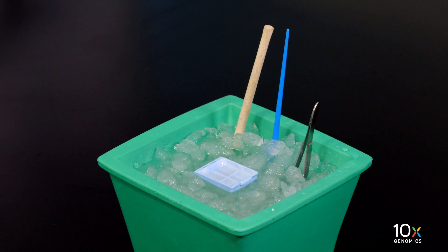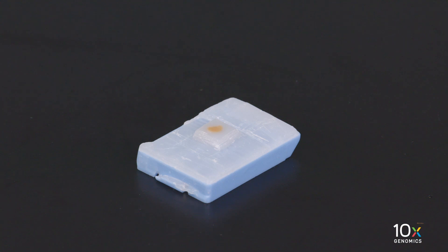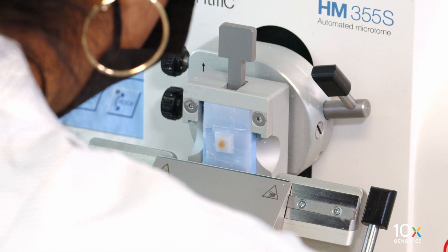Now we can collect sections from the ffpe block. The tissue block has been incubating in an ice bath. The tissue surface appears smooth and shiny and is ready for sectioning. Place the tissue block in the specimen holder and align the block with the blade.